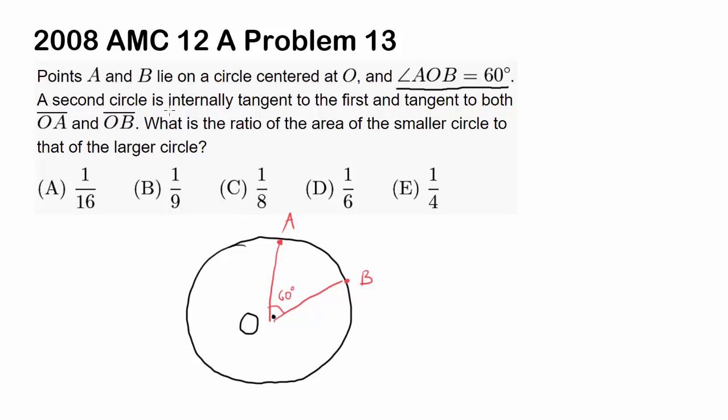A second circle is internally tangent to the first and tangent to both OA and OB. That's telling you the circle looks like this. It's tangent to OA, tangent to OB, tangent to the circle, so it's a circle that fits right in touching every single one of these sides and curves at one point.